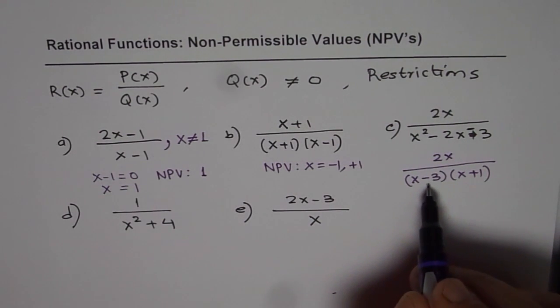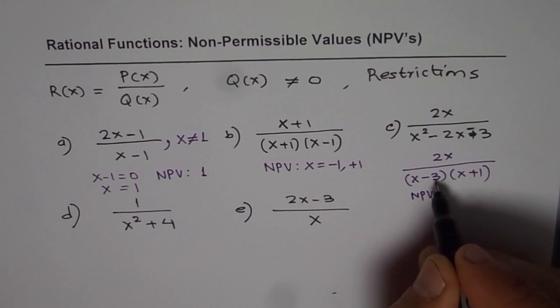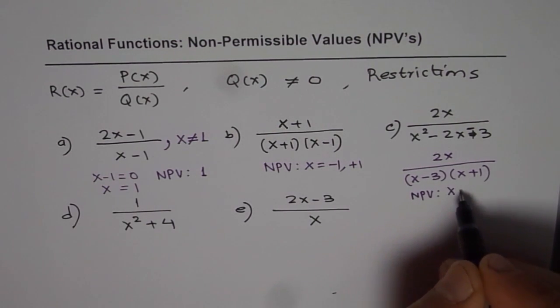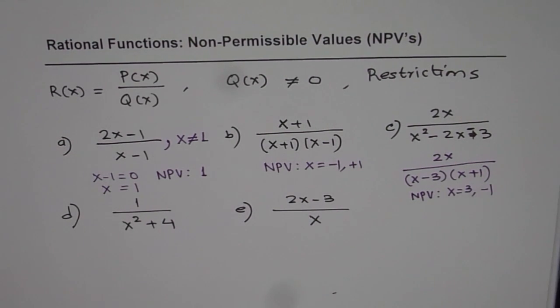Now this denominator will be 0 for x equals 3. So the non-permitted values in this case are x equals 3 or minus 1. There are two values since we have these two factors which could be 0.